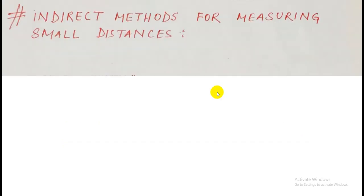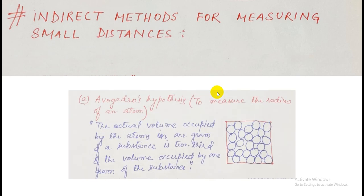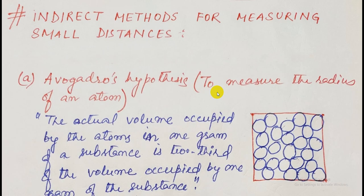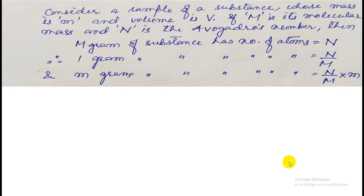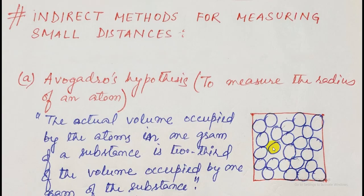Let us see what are the methods that we can consider. The first way that we are going to consider here is Avogadro's hypothesis. You can see here we consider a particular volume. In this volume, you see some of the spaces are empty.